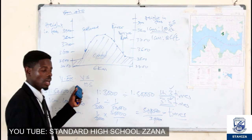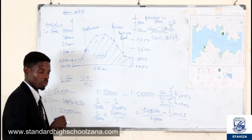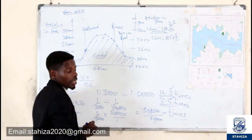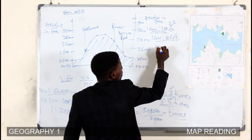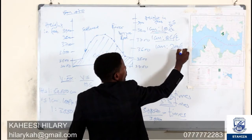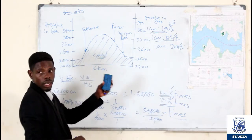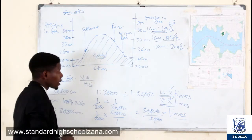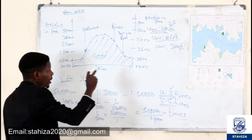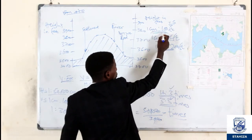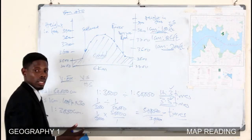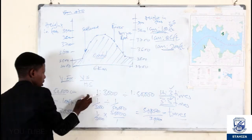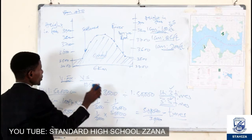Since there is no constant answer for vertical exaggeration, please use your own vertical scale consistently. Even if someone uses 1 to represent 200 feet as the vertical scale, the shape of the cross section will remain the same. Make sure the scale you use while drawing is the same scale you use when calculating the vertical exaggeration.